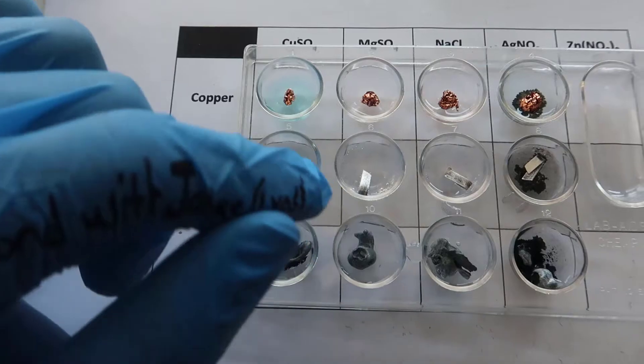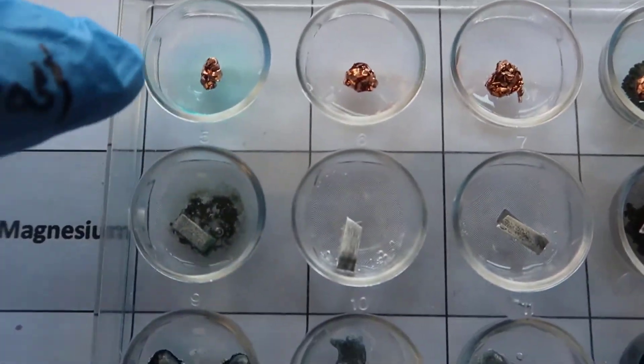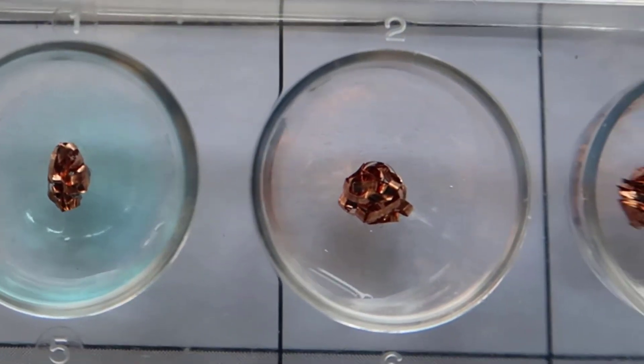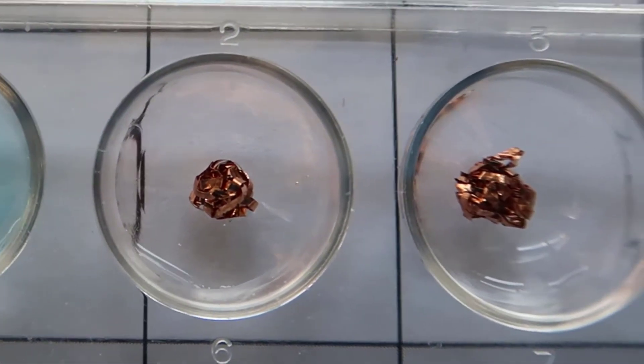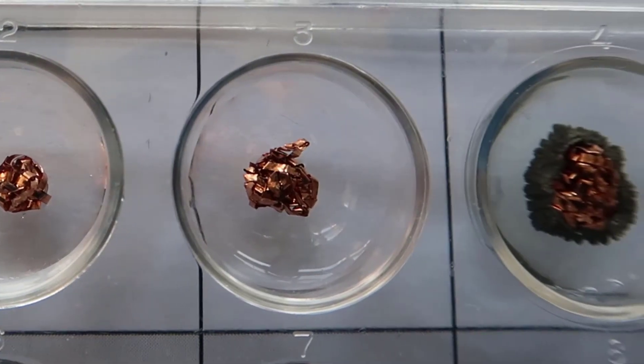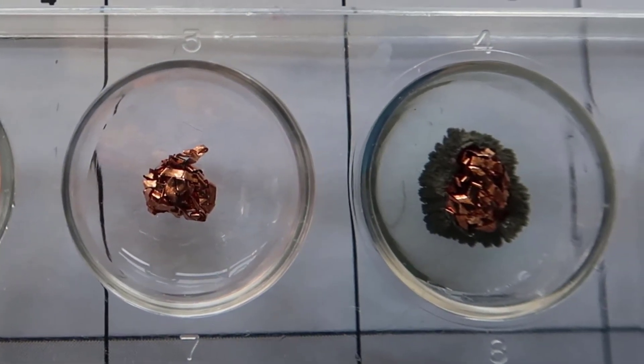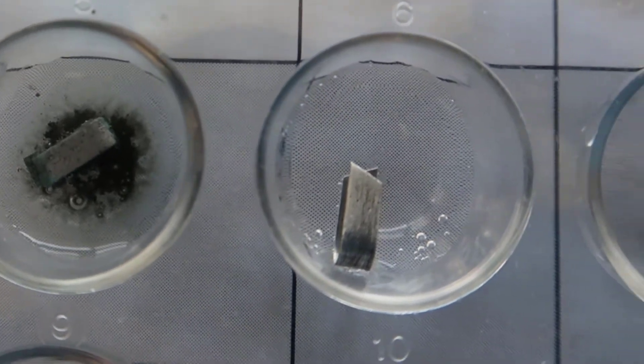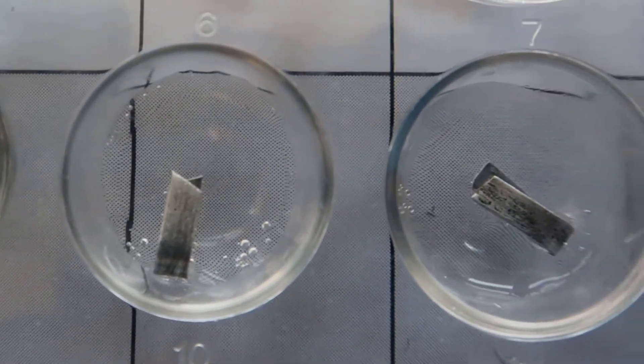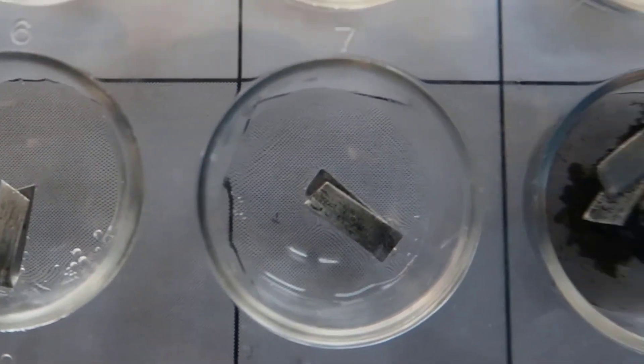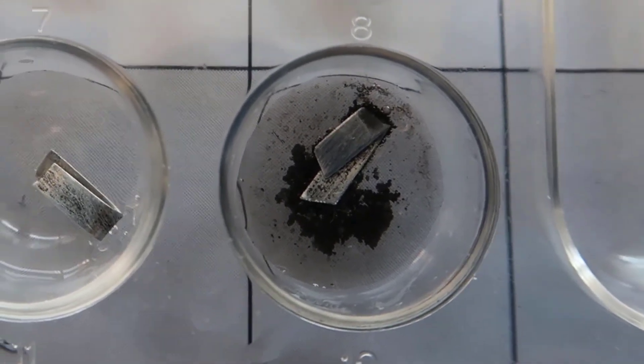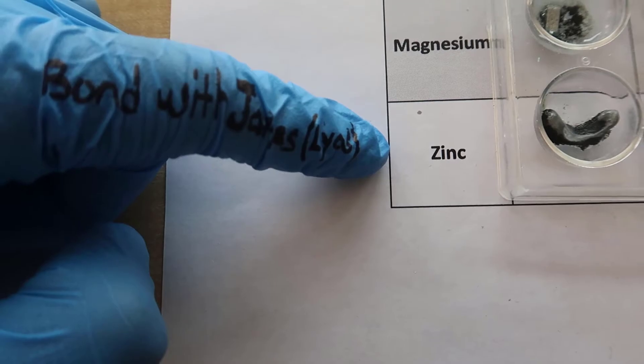Let's take a look at each of the reactions, if there was a reaction. First we're going to take a look at copper. Now we're going to take a look at magnesium. And finally, we're going to take a look at zinc.